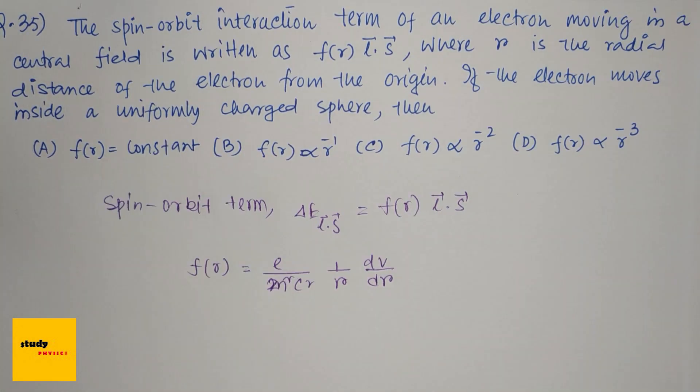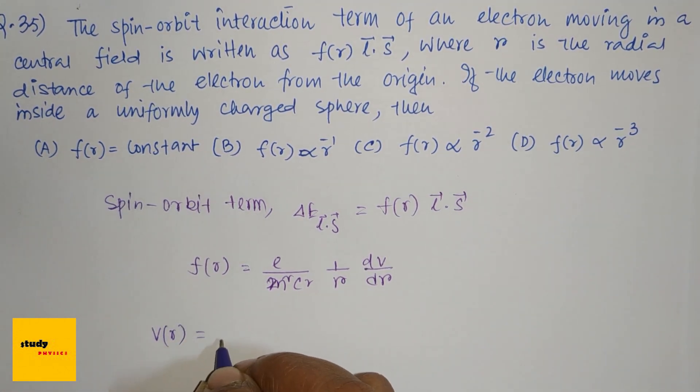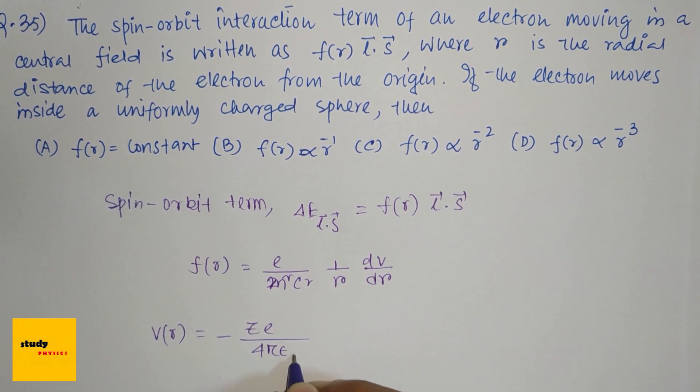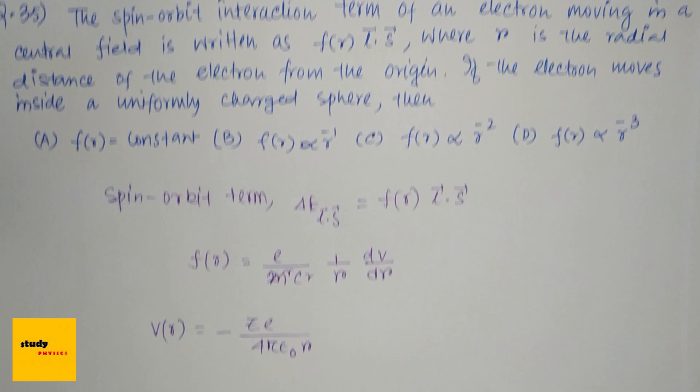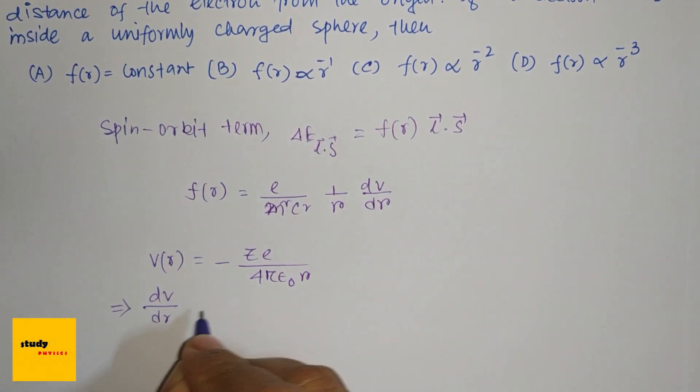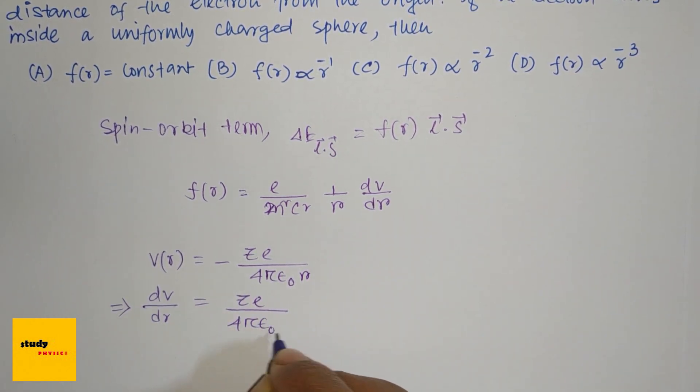So for hydrogen-like atoms, the electron moves inside a central field. The field is V(r) = -Ze/(4πε₀r). Then dV/dr = Ze/(4πε₀r²).